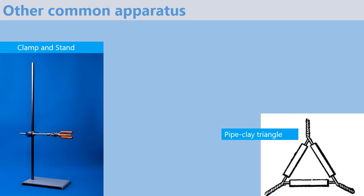Next is a pipe-clay triangle which is used for supporting crucibles during heating.